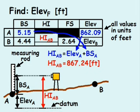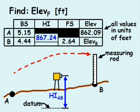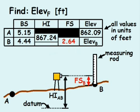Next, the rod man sets the rod vertically at point B, and the instrument man takes another level shot at the rod. This reading on the rod represents the foresight elevation, which in this case is for point B, and for this example equals 2.64 feet.